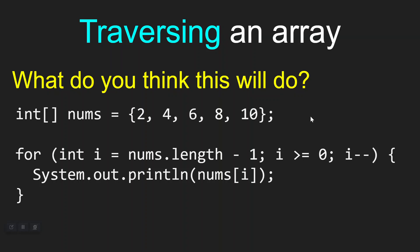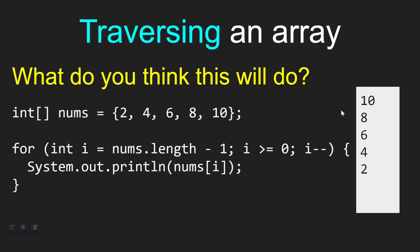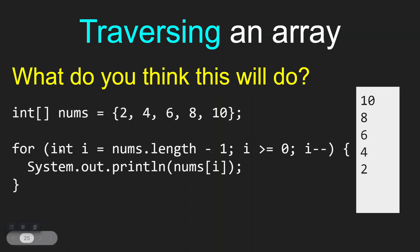Hopefully you noticed that this is going to traverse the array in reverse order, printing 10, 8, 6, 4, and 2. The for loop says: for int i equals nums.length minus 1. nums.length is just an integer — the length of this array is 5, so 5 minus 1 means i starts at 4. You can read this as: for int i equals 4, as long as i is greater than or equal to 0, i--. So we first print nums at position 4, then 3, 2, 1, and 0. When i reaches negative 1, it's no longer greater than or equal to 0, so the for loop halts.